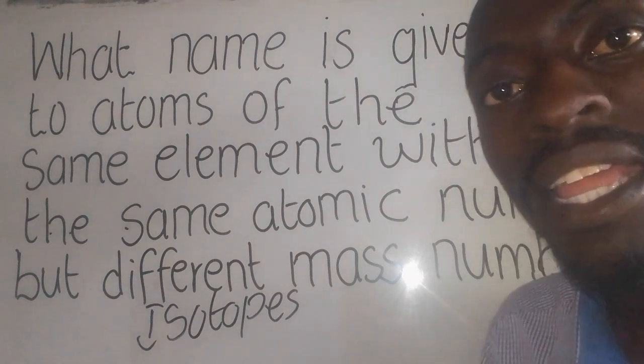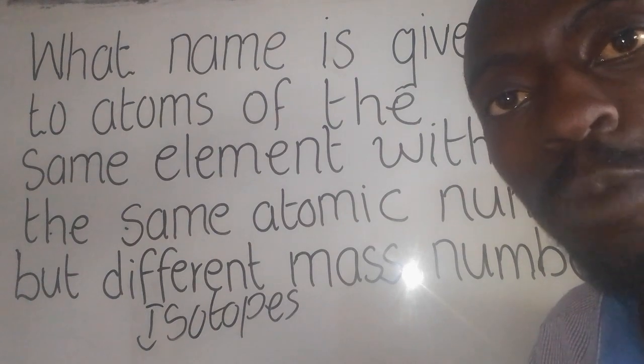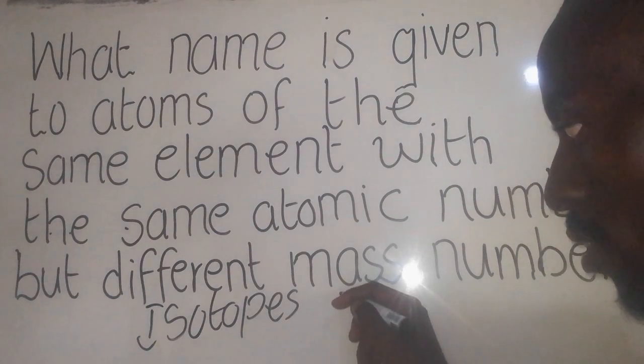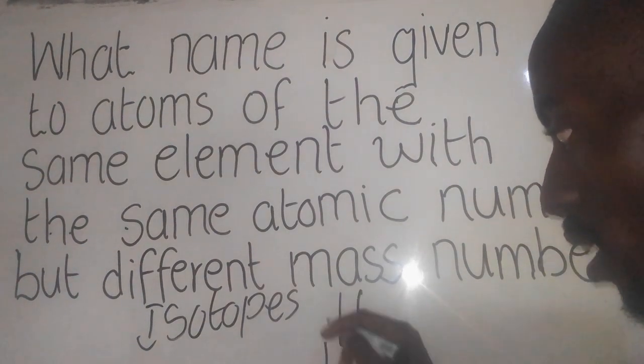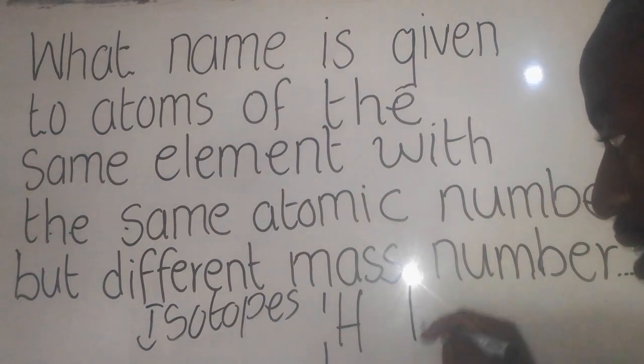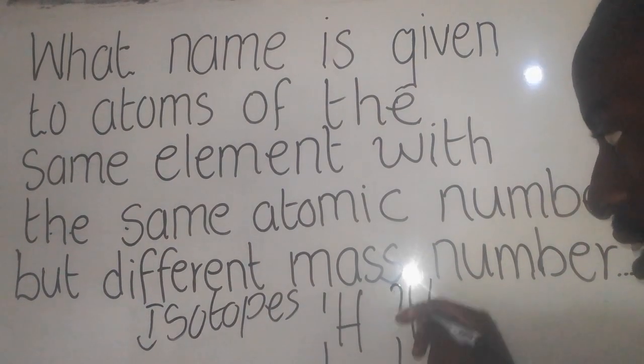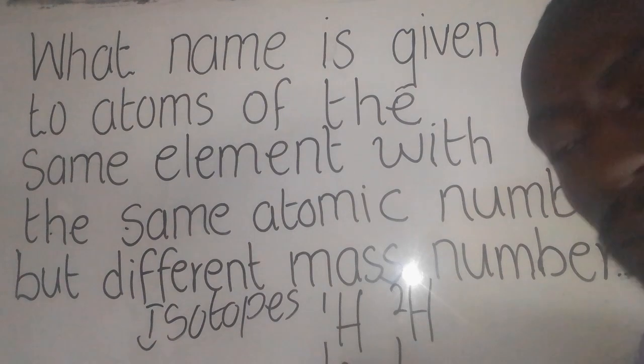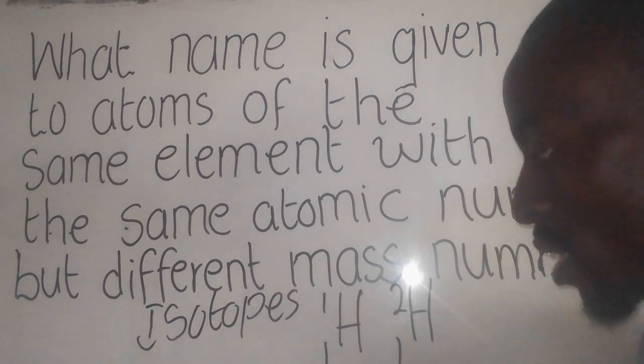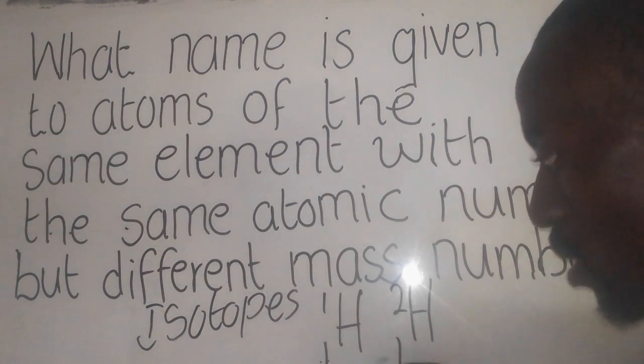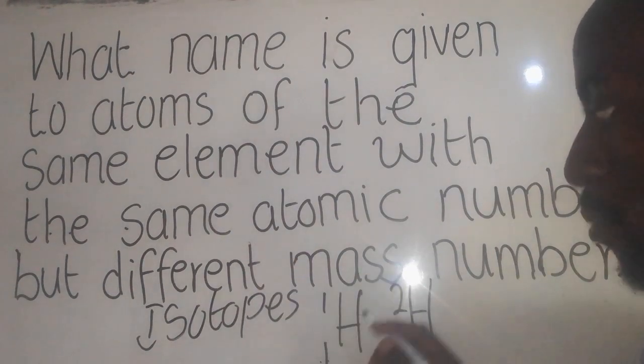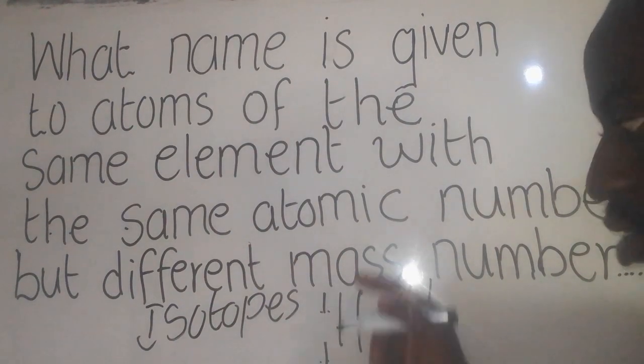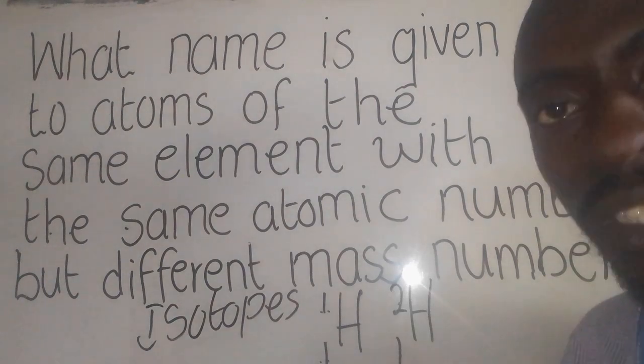Examples of isotopes of hydrogen: we have this one, and this one. This one is called the protium, this one is called the totalium. These have the same atomic number but are different in quantity in the mass number. So the answer here should be isotopes.